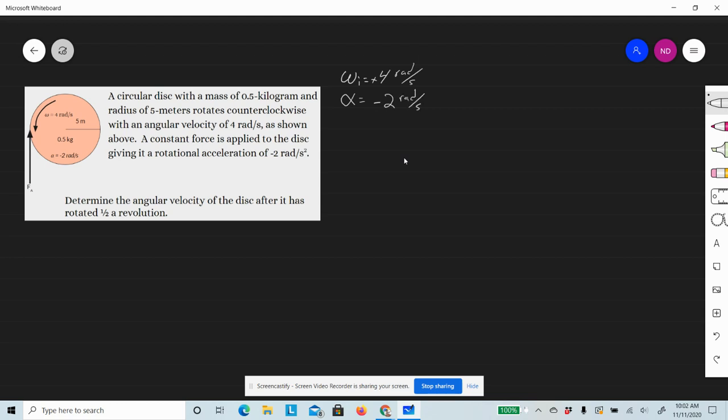They want us to figure out the final angular velocity, Omega_f. What else do we know? We need to determine the angular velocity after it has rotated half a revolution, so the change in distance is one-half a revolution.